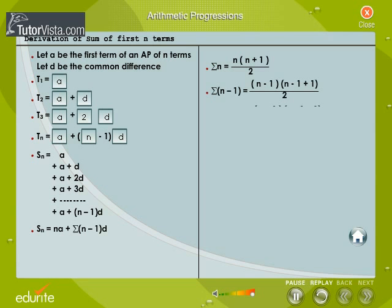In the same way, sigma n minus 1 that is the sum of the first n minus 1 natural numbers is equal to n minus 1 into n minus 1 plus 1 by 2.